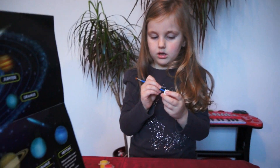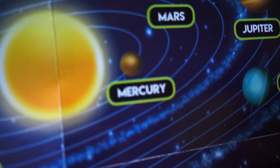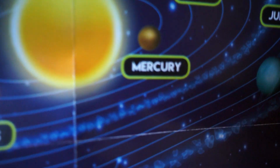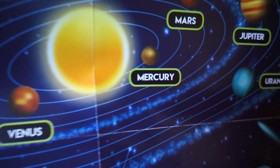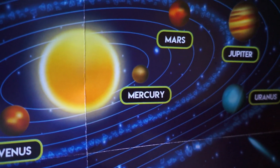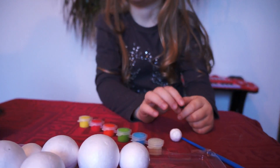The smallest one, the one that's closest to the Sun, is called Mercury. Mercury is the smallest planet in our solar system — it is only a little larger than Earth's moon. And now Nadia will paint it.